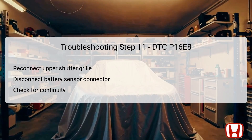In step eleven, reconnect the upper 4P shutter grille connector to allow for accurate assessments of the circuits involved. Then, disconnect the battery sensor 2P connector to streamline the continuity check process. Verify continuity between the specified terminals while again maintaining the vehicle in the off mode. If continuity is confirmed, it suggests the issue lies elsewhere. If continuity is interrupted, then the upper shutter grille could be defective and in need of replacement, completing the diagnostic resolution for the problem identified by DTC P16E8.